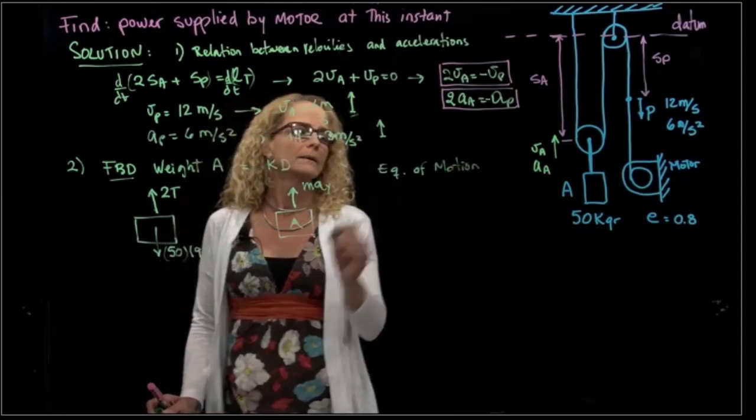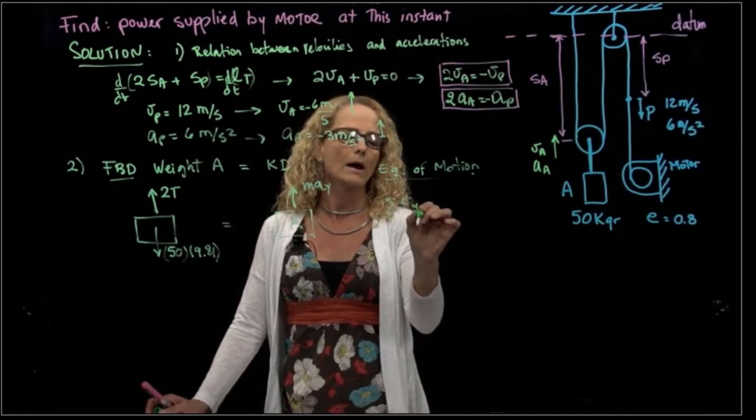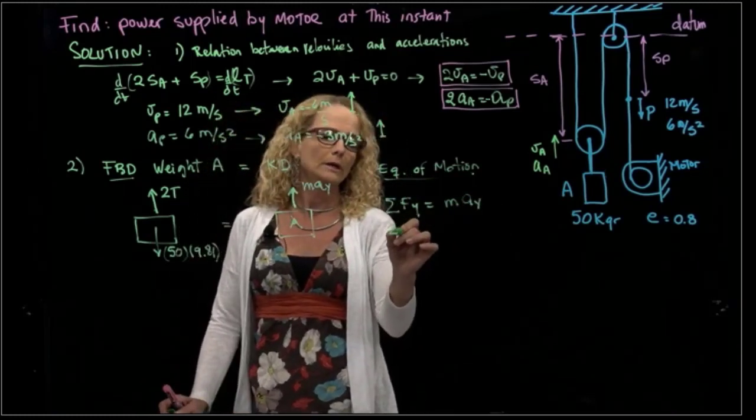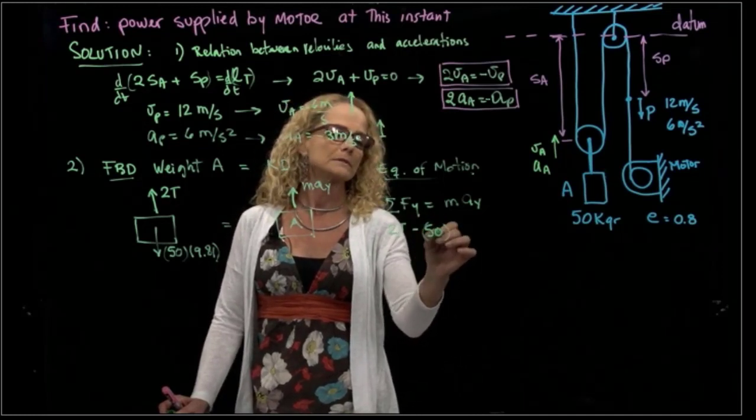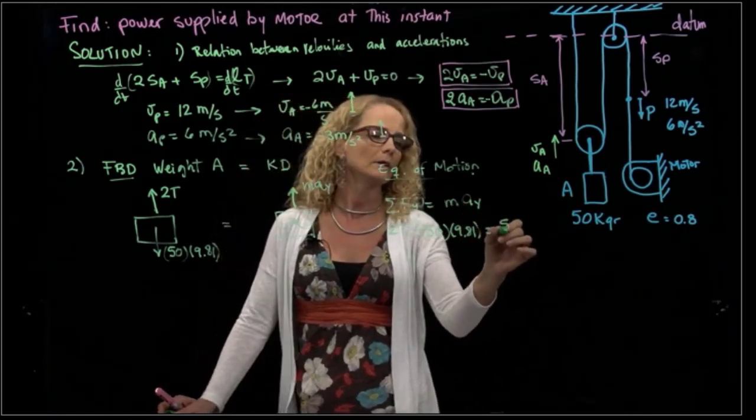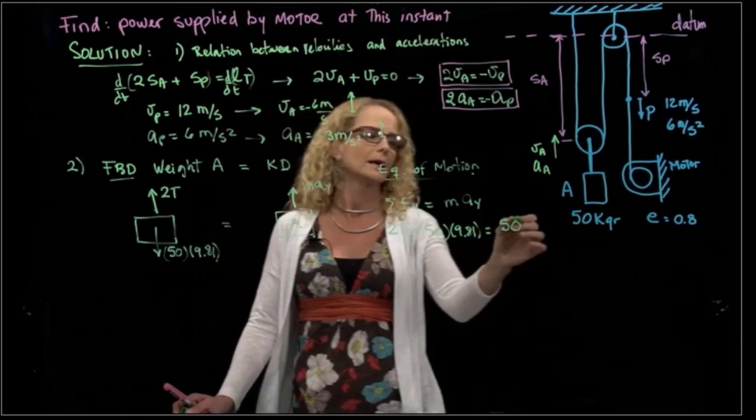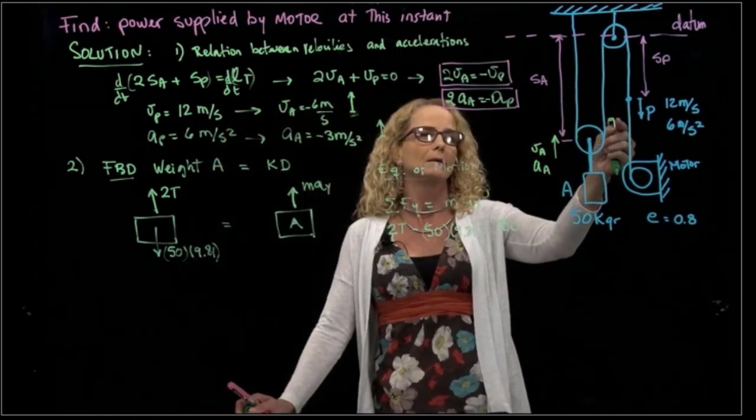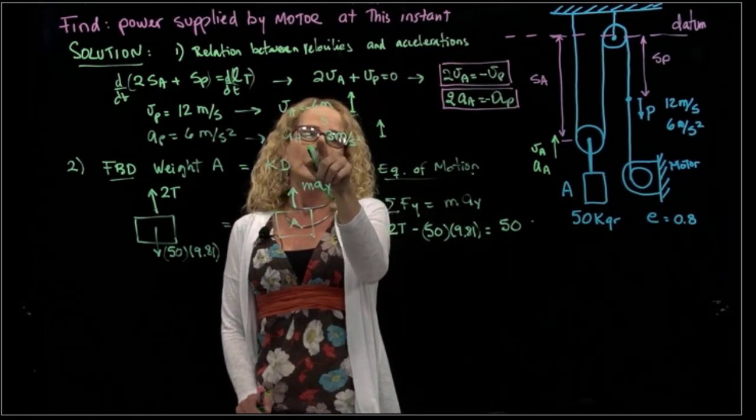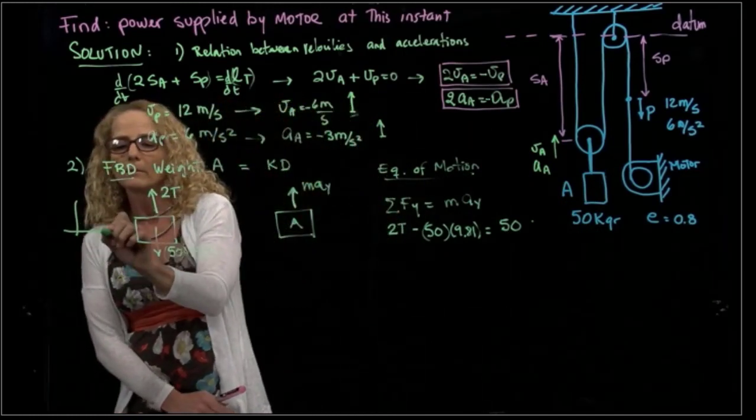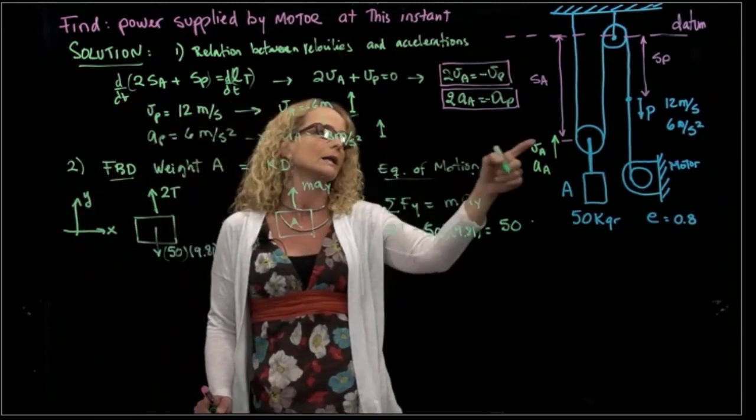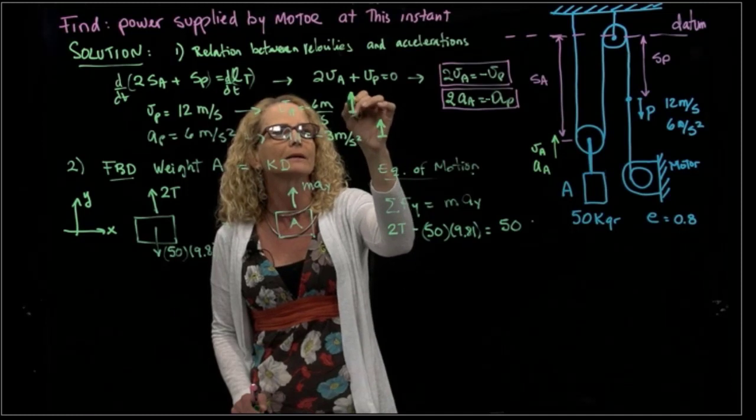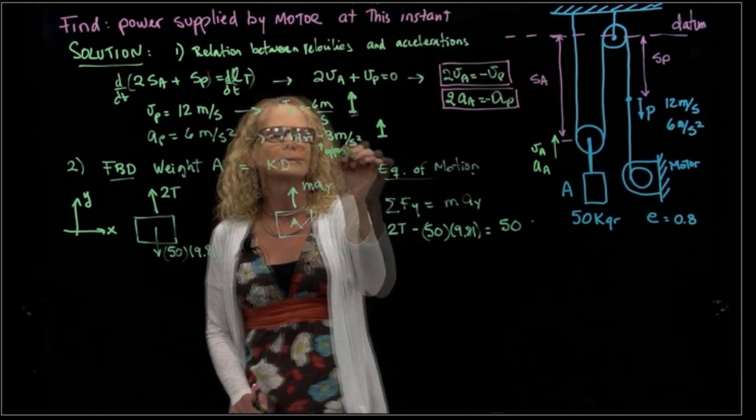I can say that forces in Y equals mass times acceleration in Y. So I have that 2T minus 50 times 9.81 equals 50 times the acceleration in A that I already said. It's very important that that negative relates to that it's opposite to my P. So it's very important that even though I wrote a negative here, if I put my diagram right here, I should say that P is actually negative and this is positive. So this arrow is very important to know where my acceleration goes. This negative is opposite to P.